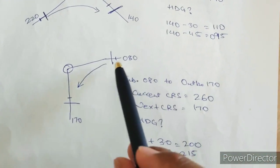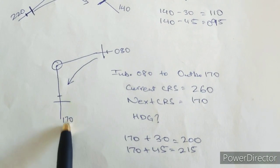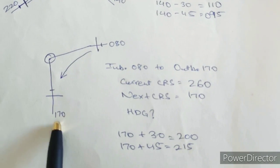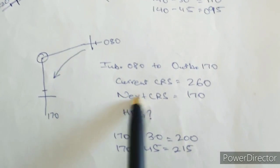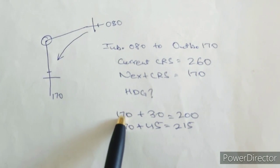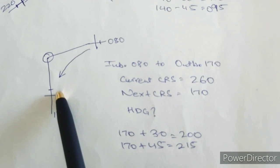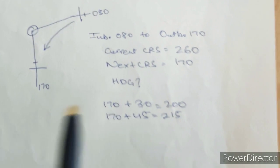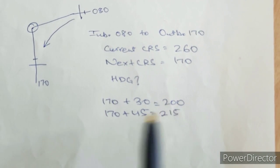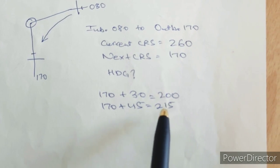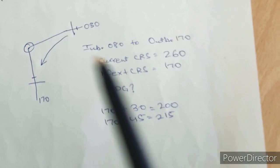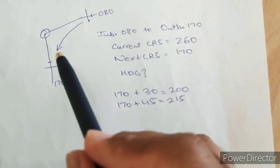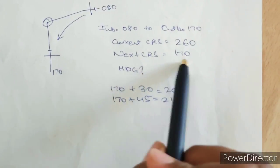Another inbound to outbound example: going inbound on radial 080 and wanting to fly outbound on radial 170. Your current course is 260 — the opposite of 080. Your next course is 170, the outbound radial. Since you are turning left, the heading correction is towards the right — add to the new course. So: 170 plus 30 gives heading 200 within 5 miles, or 170 plus 45 gives heading 215 beyond 5 miles. Following heading 200 within 5 miles, or 215 beyond 5 miles, allows you to intercept radial 170 outbound and then fly on course 170.